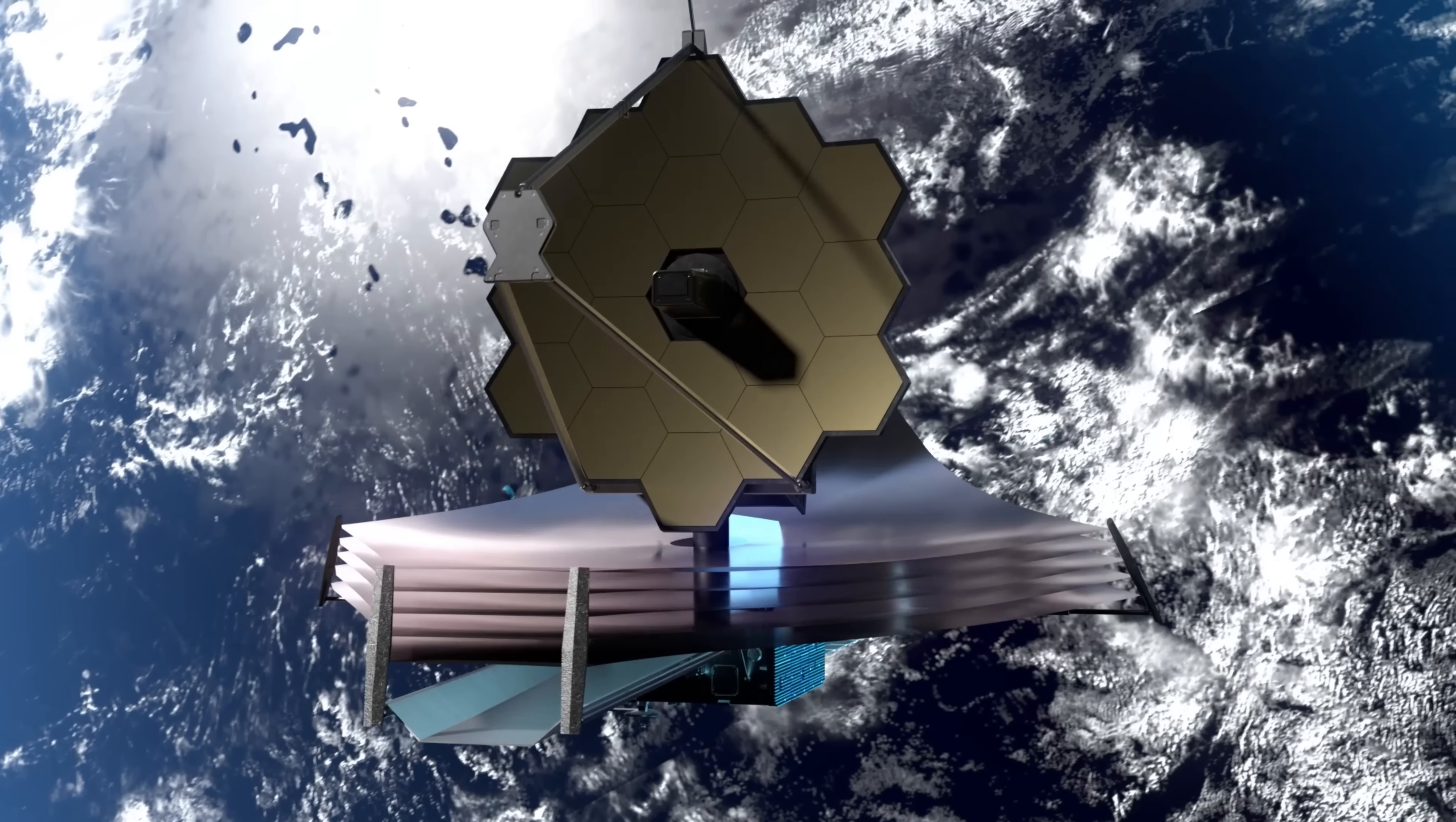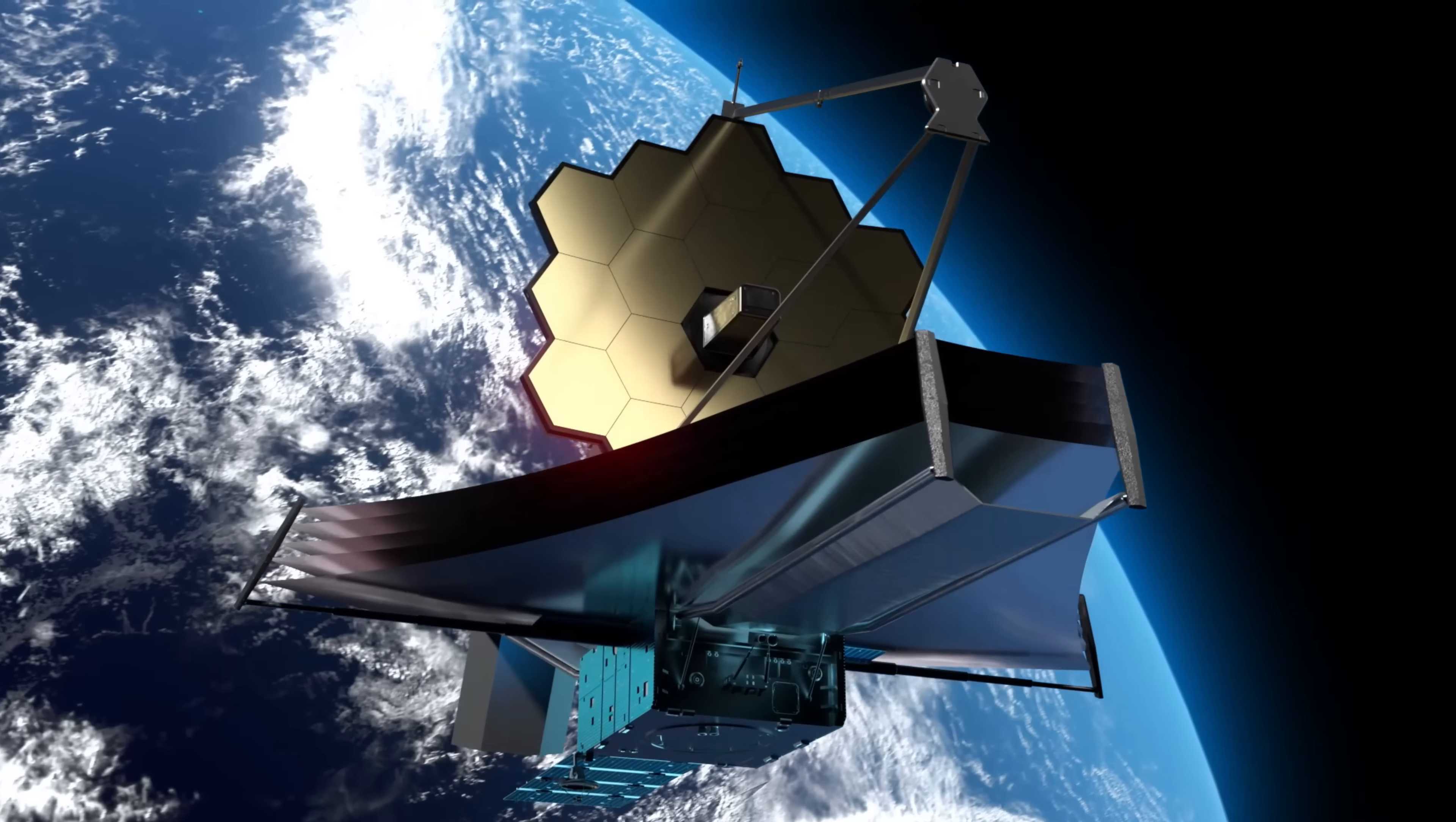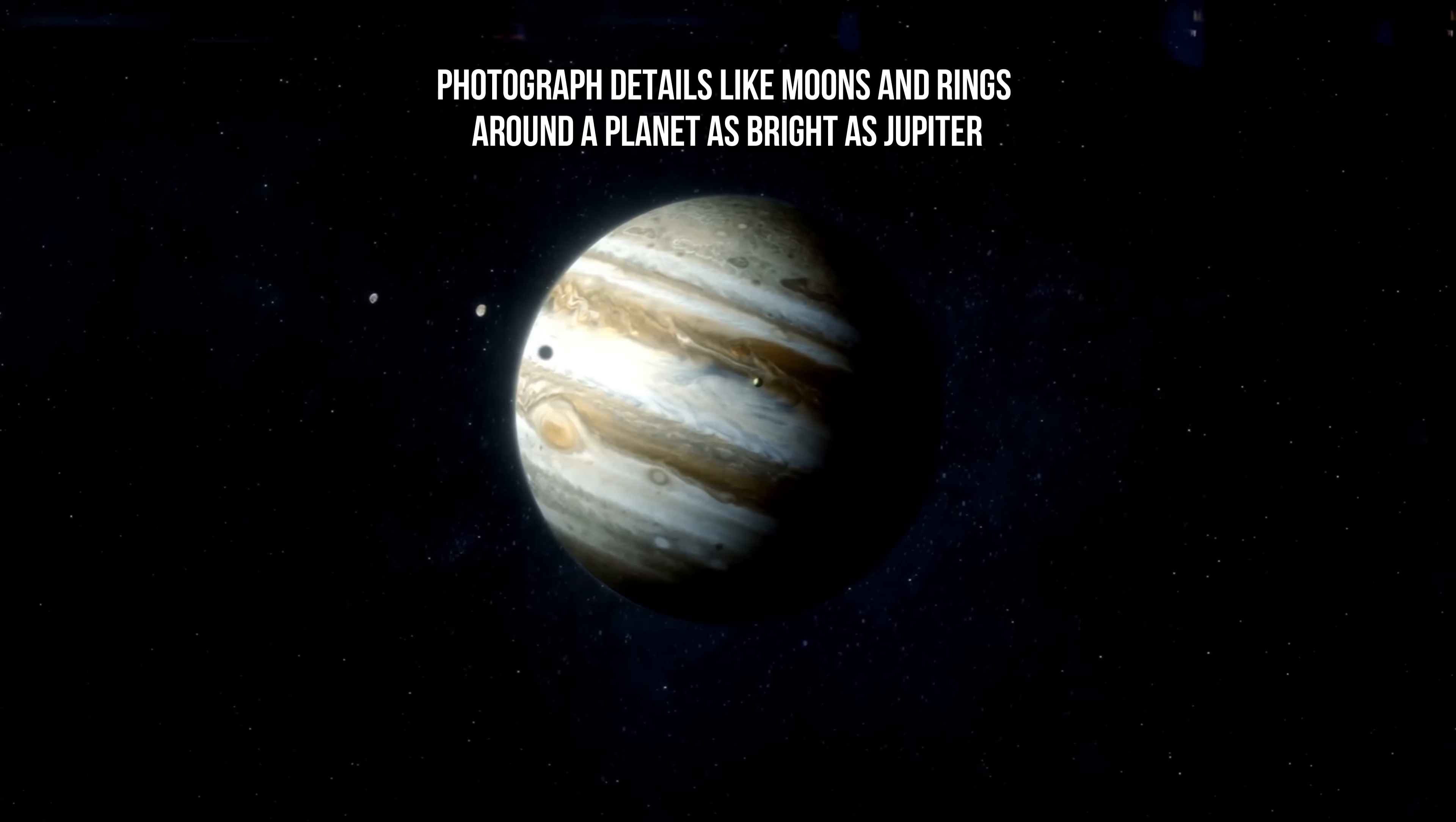James Webb observed Jupiter as part of a test to ensure that JWST could track fast-moving objects through the solar system. This test also showed that it's possible to use JWST to photograph details like moons and rings around a planet as bright as Jupiter.